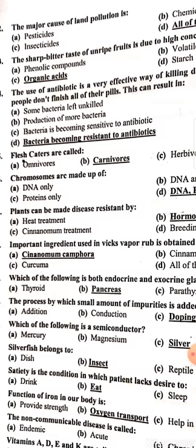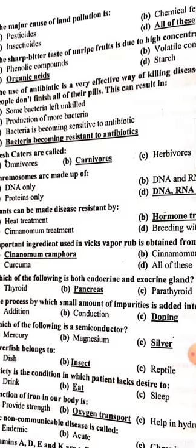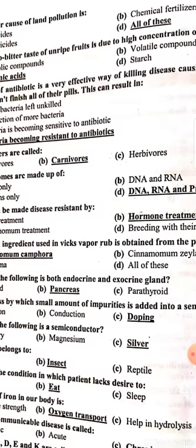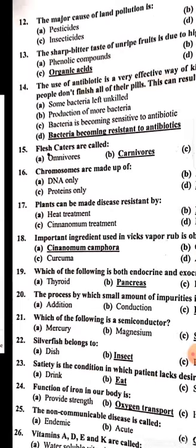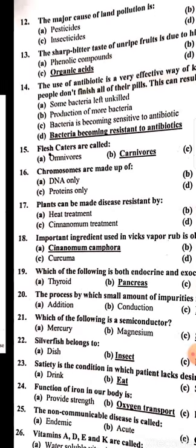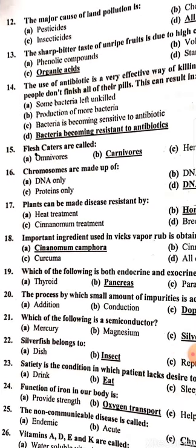The major cause of land pollution is pesticides and insecticides — all of these. The sharp bitter taste of unripe fruit is due to a high concentration of organic acids. Flesh eaters are called carnivores.